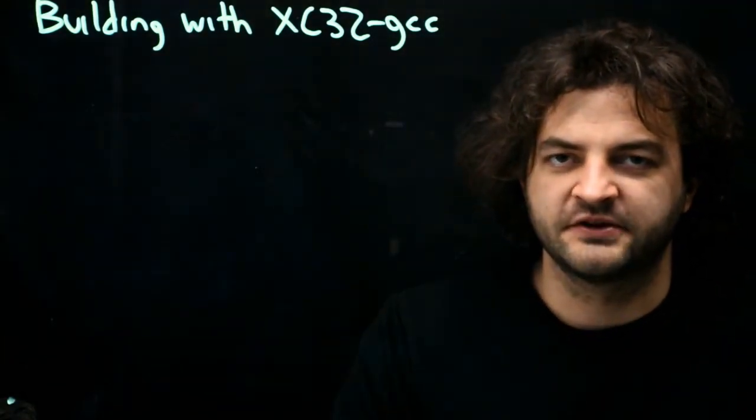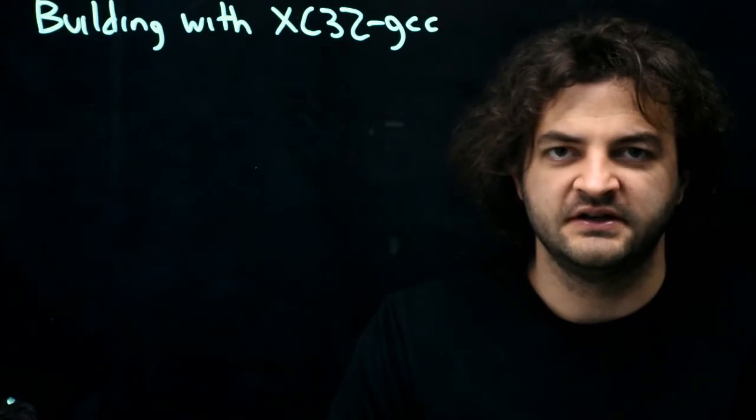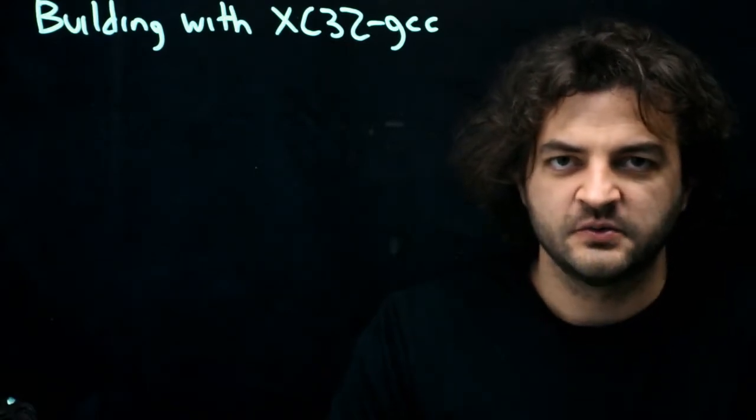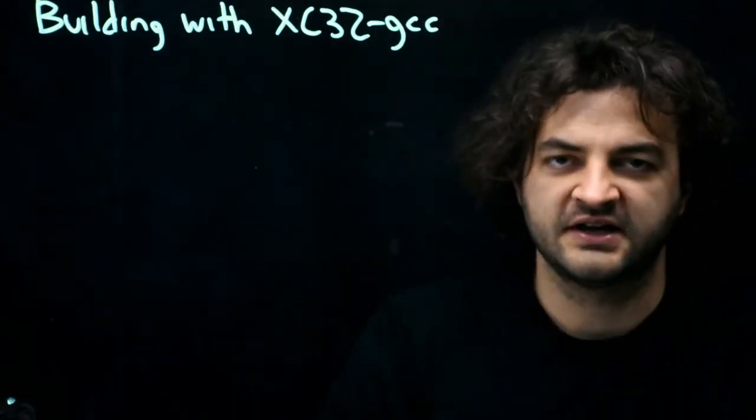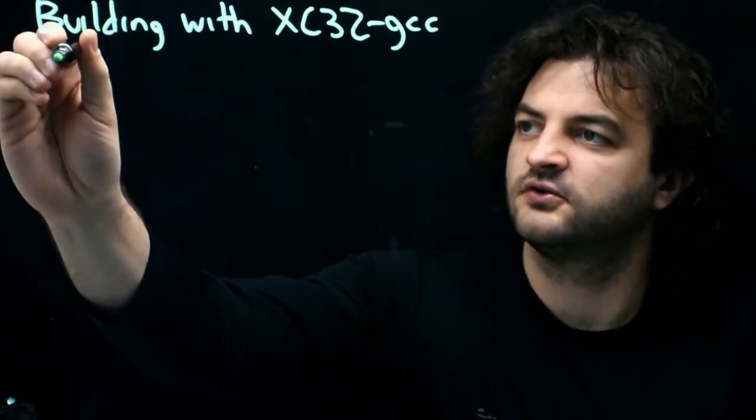Now that we're writing code for the PIC32, we're not using the standard GCC compiler. We're using a specific modification of it from the company Microchip called XC32-GCC. So we call this a cross compiler.